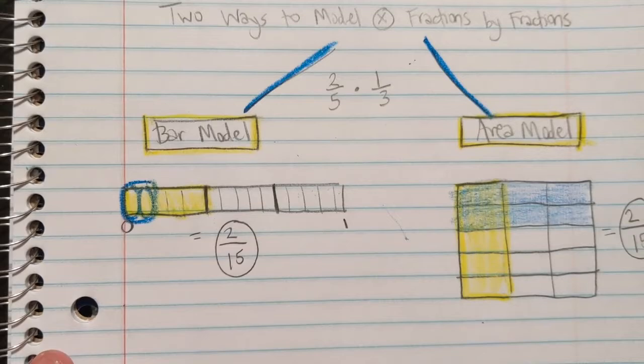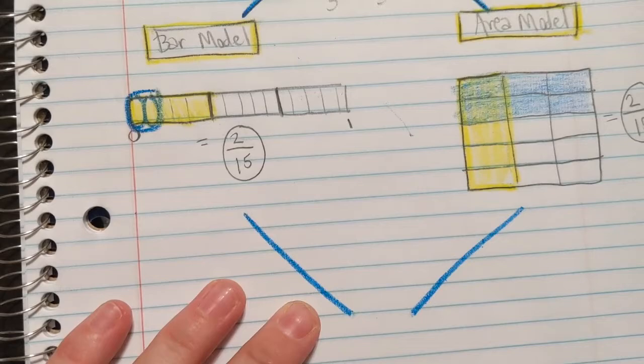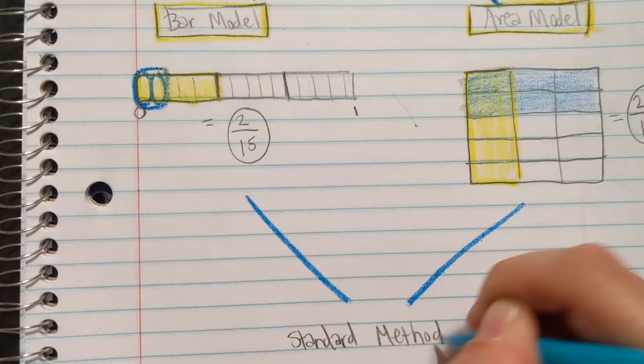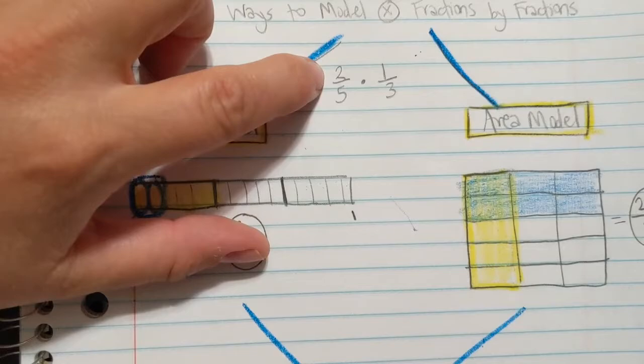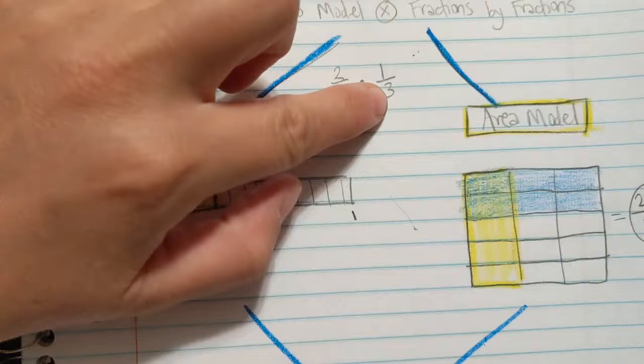Here is what we're doing today. Maybe some of you have already noticed this. Okay? So you're going to draw two blue lines going from both of these models. Maybe some of you have already noticed this, but there is a standard algorithm. Now we've just been learning how to model. So today we're learning what the standard algorithm is. We'll actually call it just method. The standard method, because I don't really know that it's an algorithm, but the standard method. Think about this for a minute. Two fifths times one third was two fifteenths. Do you see a relationship between all of this? First of all, what was two times one? Two. What's five times three? Fifteen.